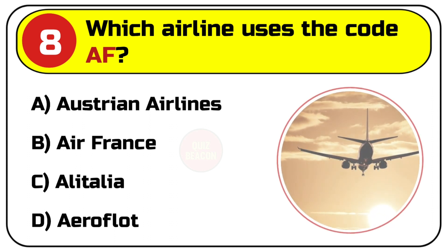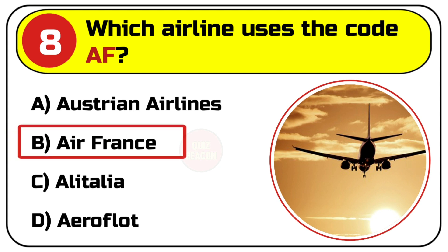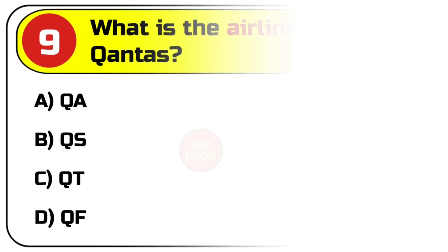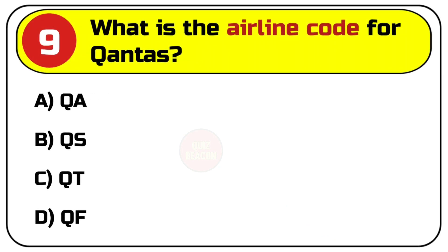Question number eight: which airline uses the code AF? Options are A. Austrian Airlines, B. Air France, C. Alitalia, D. Aeroflot. Correct answer is B. Air France.